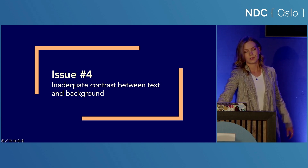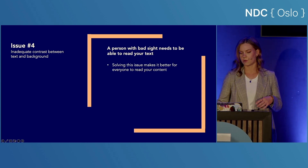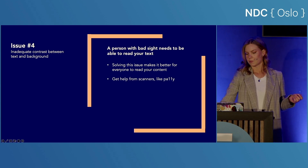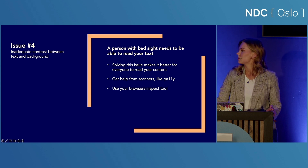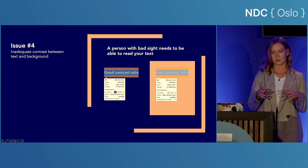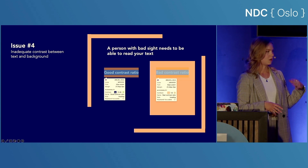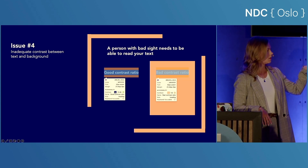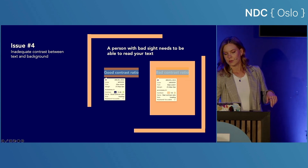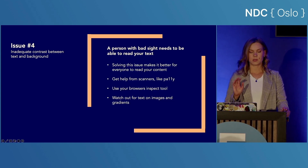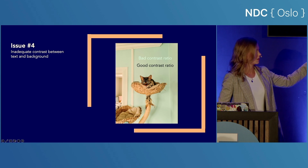Issue number four: inadequate contrast between text and background, which can make it difficult for visually impaired people to read your content. Solving this also makes it better for everyone. A lot of contrast ratio errors can be captured with an accessibility scanner like Pali. You can also use your browser's inspect tool — most browsers let you hover over an element and see the contrast ratio right there. A high number means accepted contrast, and a warning symbol indicates a bad contrast ratio. Remember, text on images and gradients can't be easily checked by computer tools alone, so you have to manually check all colors in the background of an image or gradient against the text color on top.